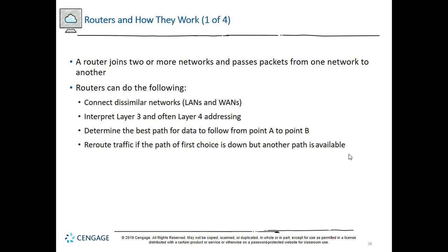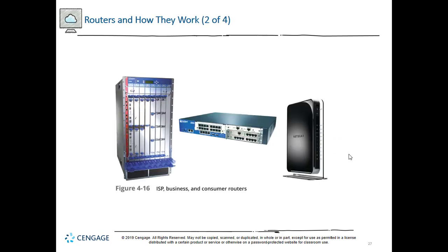Routers communicate with other routers using routing protocols, which allow us to connect similar networks. They interpret layer 3 and layer 4 addressing — web traffic, FTP traffic — and determine the best path. There are multiple paths to get from point A to point B, and routers choose the fastest, least congested, or most efficient. During a transmission, the route might actually change — traffic can be rerouted mid-conversation if a better route is found.